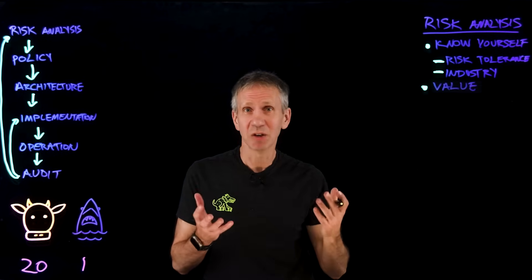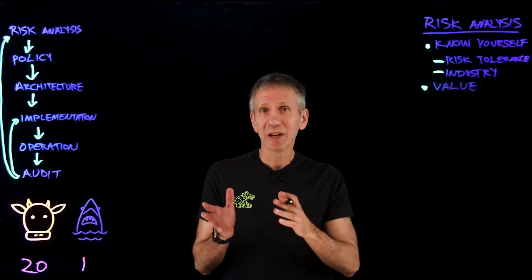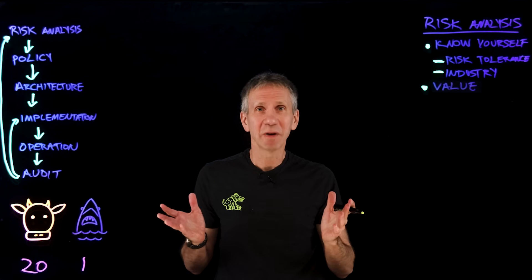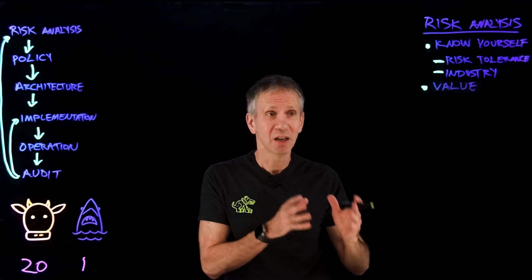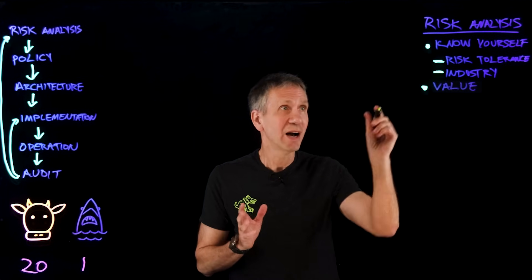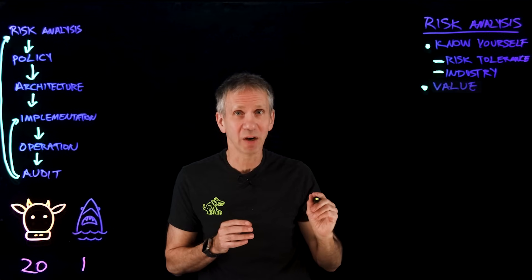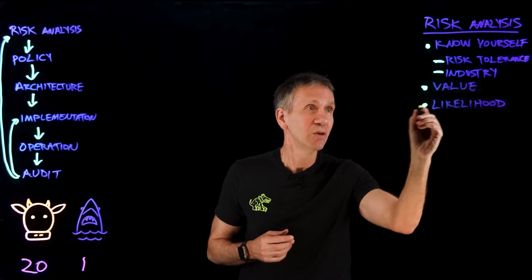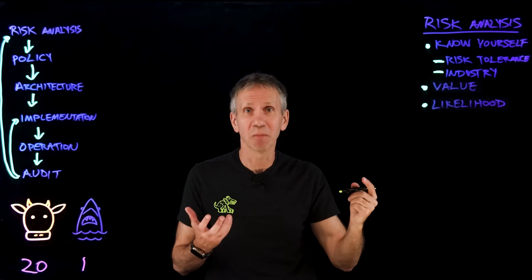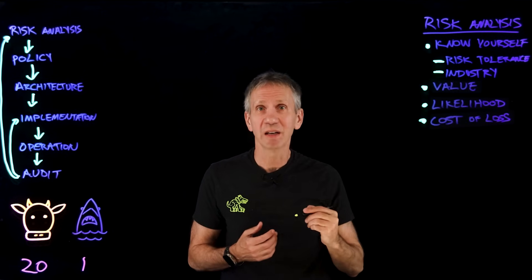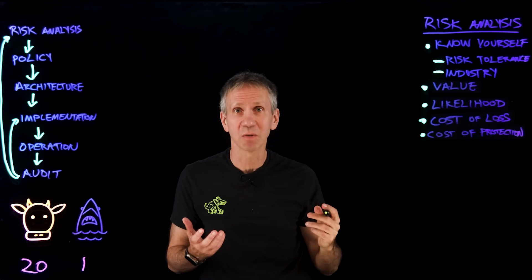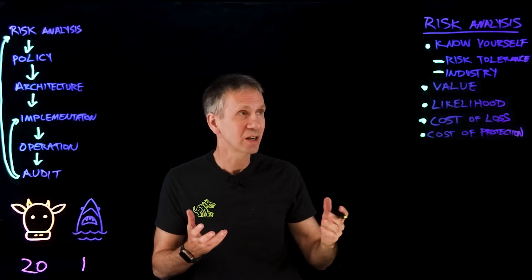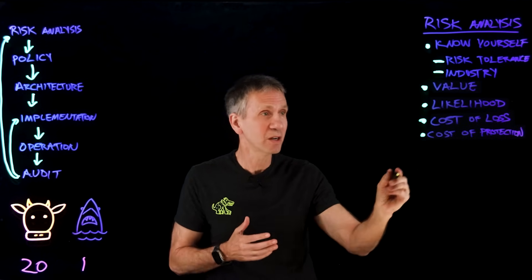Let's take a look at the value of what we're putting at risk, because not everything is of equal value. Think about this as a spectrum — we've got things like the lunchroom menu, which doesn't really matter if anybody sees it, and then we've got the keys to the kingdom, the existential threat where if somebody gets a hold of that, we're out of business. So I've got to consider the value, then what's the likelihood that it will be lost or compromised, then what's the cost if that occurs, and then what's the cost of protection if I'm going to try some sort of mitigation.